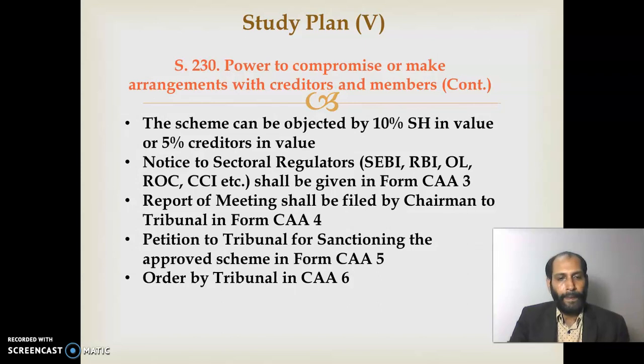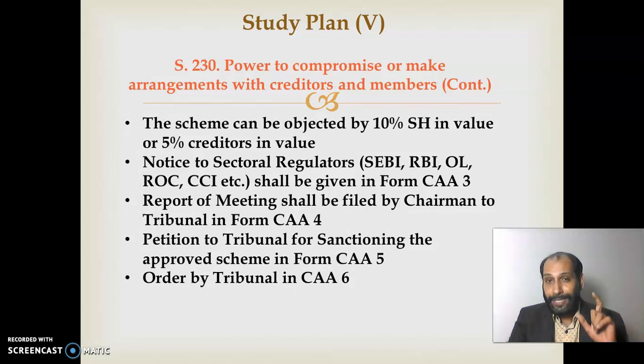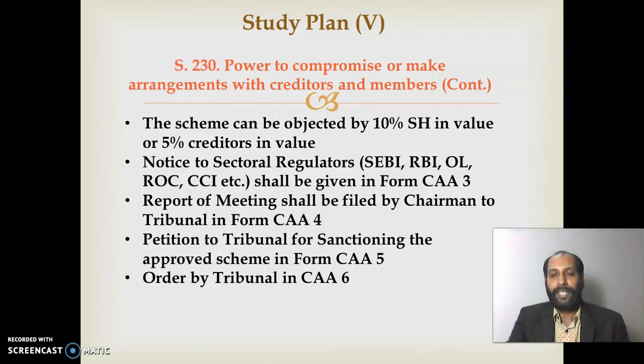Now for the second application: you file a second petition to the NCLT — because the first petition was for convening the meeting. Now that the meeting is over, you go back to the NCLT and that second petition should be in Form CA5, seeking the sanctioning of the approved scheme. The scheme has been approved by shareholders and creditors, and now it needs to be sanctioned by the NCLT. You can expect the order of the NCLT in Form CA6.